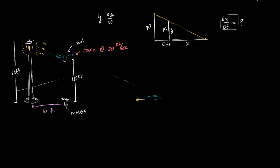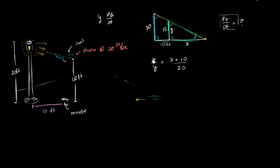Both of these triangles — the smaller triangle in green and the larger triangle in blue — are similar triangles. They both have a right angle and share another angle, so all three angles must be in common. Since they are similar triangles, the ratio between corresponding sides must be the same. We know that the ratio of x to y must equal the ratio of the entire base (x plus 10) to the height of the larger triangle, 20.